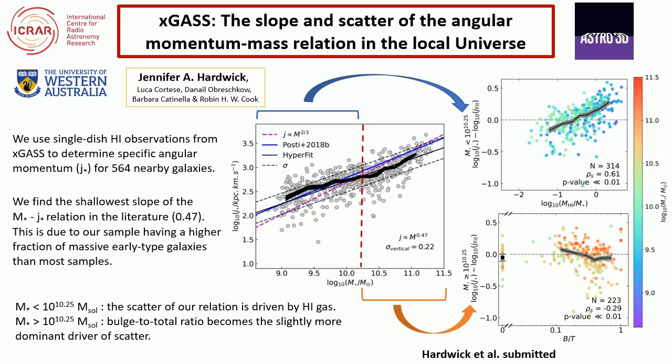In this work we use single-dish H1 observations to determine the specific angular momentum for 564 nearby galaxies. These are from the XGAS sample — the Extended Galaxy Arecibo SDSS Survey — which is selected to have a relatively flat stellar mass distribution between 10^9 and 10^11.5, meaning we have a large fraction of high mass early-type galaxies, more so than you'd expect from a volume limited sample. We assume a constant velocity profile for all radii, taken from the H1 width of the galaxies, when we calculate specific angular momentum for each galaxy.